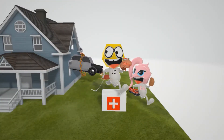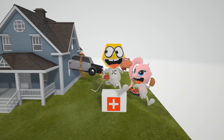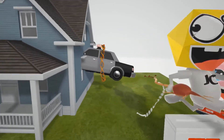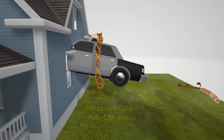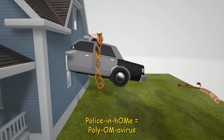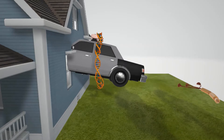This scene probably looks a little bit familiar — this was our scene on the polyomavirus, represented by the police through the home. In that video we spoke about the characteristics of the virus: a double-stranded DNA that is circular. We're not going to get into that here.